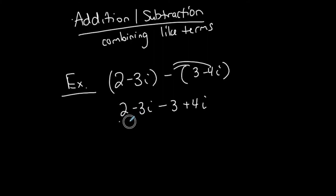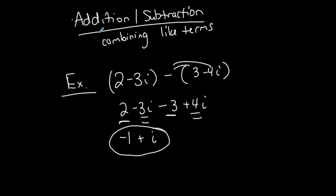Then I just combine like terms. These are the two real parts: 2 minus 3 is negative 1. Then negative 3i plus 4i is positive 1i. And this is my difference — the real part and the imaginary part. We always put it in the form a + bi. So very simple — just combining like terms for adding and subtracting complex numbers.